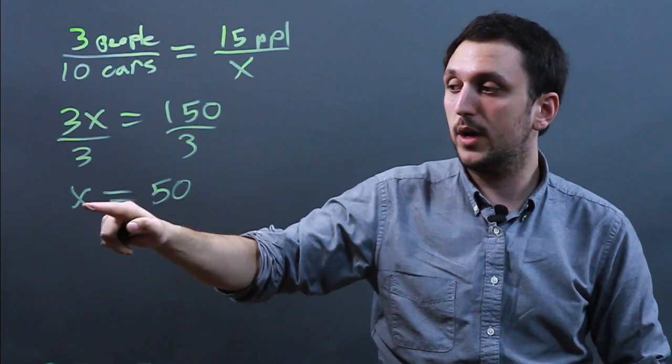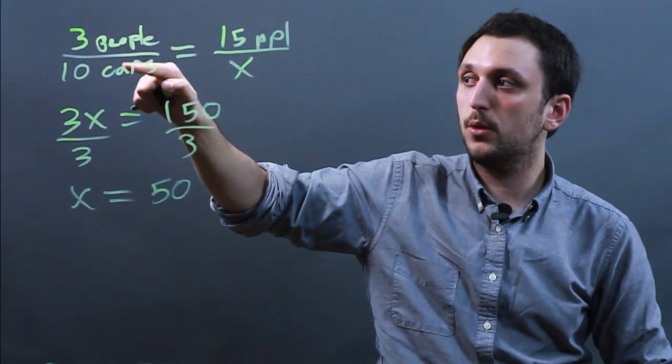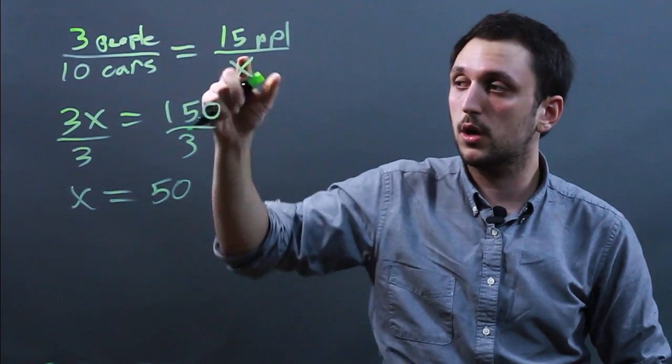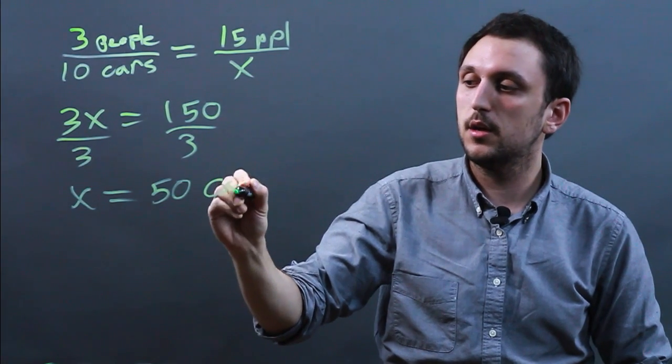Now, it's important to keep track of what x represents. Here we have people over cars equals people over cars. So x equals 50 cars.